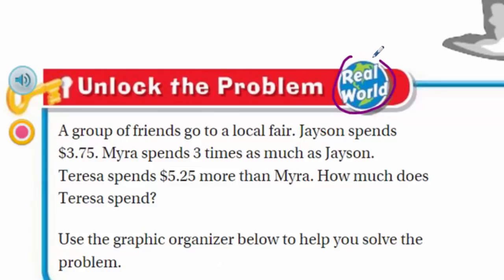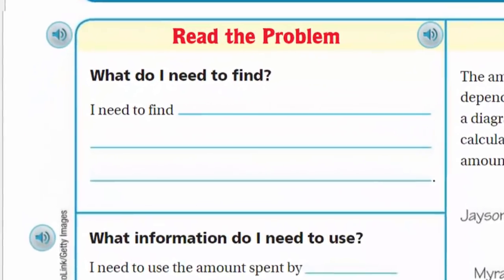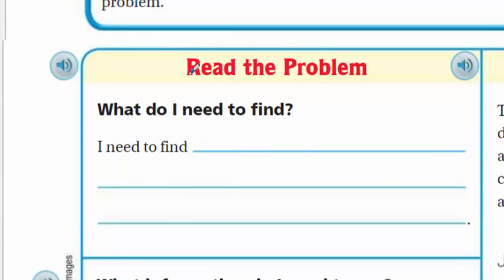This is a real world problem — I love that. We have a little Ferris wheel. A group of friends go to a local fair. Jason spends three dollars and seventy-five cents. Myra spends three times as much as Jason. Teresa spends five dollars and twenty-five cents more than Myra. How much does Teresa spend? It says to use the graphic organizer below to help solve the problem. Let's think about how to break it up into pieces — we call that unpacking the problem. By unpacking it, it's less intimidating.